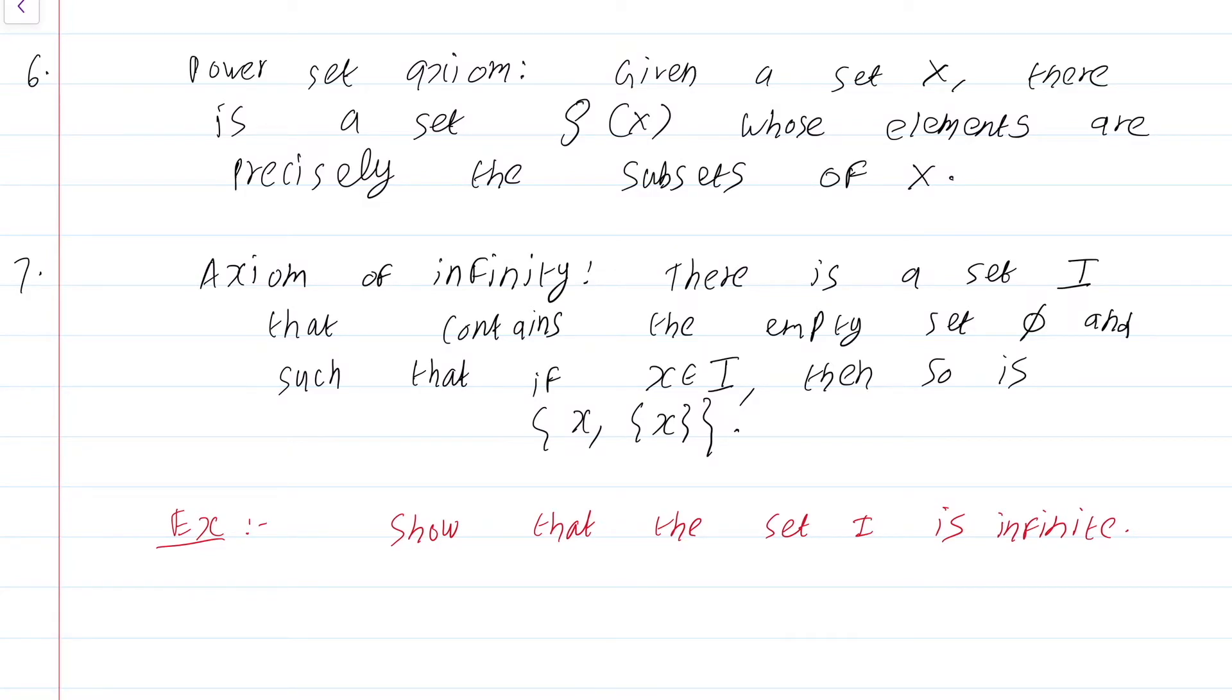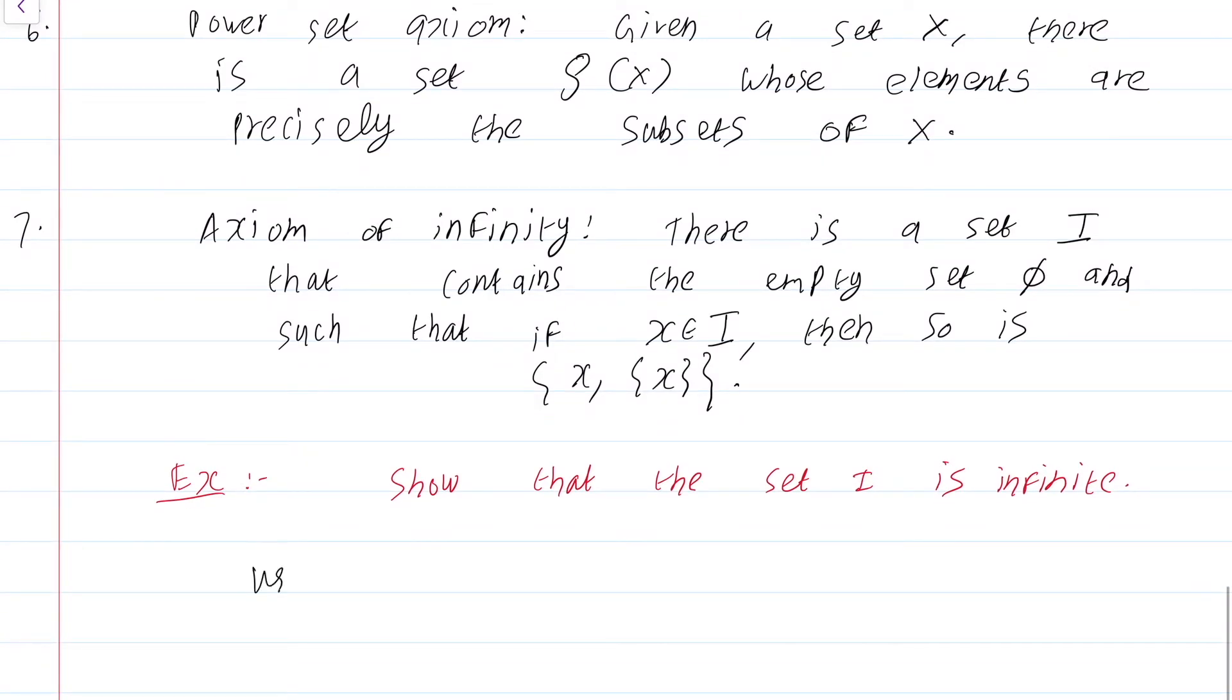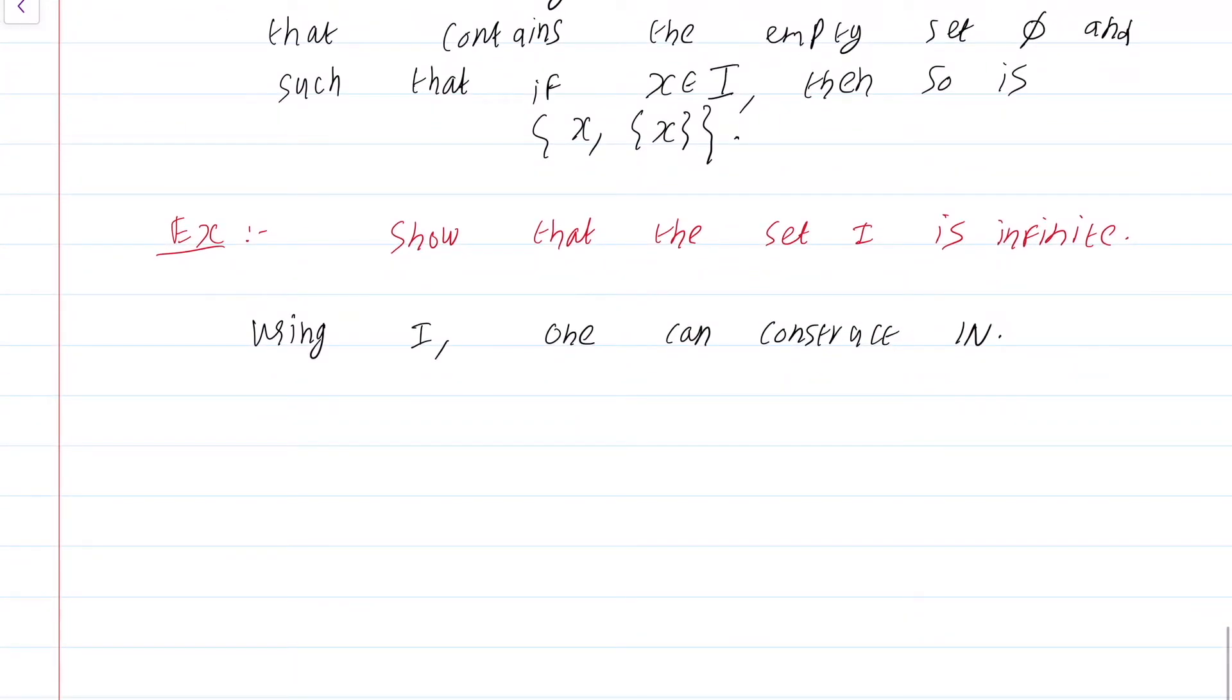If you are not familiar with finite and infinite sets, just few modules down the line we will see cardinality, solve this exercise after I define rigorously what an infinite set is. So, this axiom guarantees that there are infinite sets. In fact, using I one can construct the natural numbers N and once you construct the natural numbers N, you can construct all the sets needed in most of mathematics. As the famous quote of Kronecker goes, God created the natural numbers, everything else is the work of man.